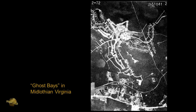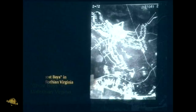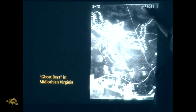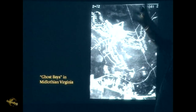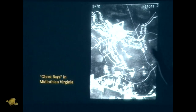Here's what I'm calling ghost bays. As you get up off the coastal plain and transition onto the Piedmont, the bays go from being very well defined to just being almost like ghost-like shadows. But you can see a ghost bay right here - and then as you go a little further, they disappear completely.